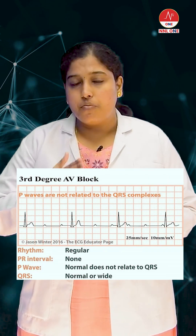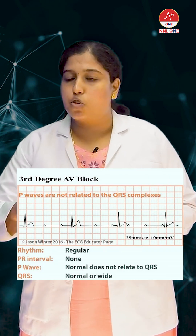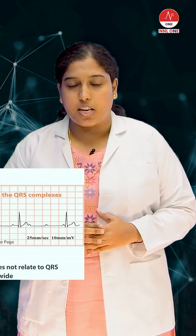Lastly, we have the third degree heart block, which is otherwise known as a complete heart block, where there is no association between the P wave and the QRS complex.